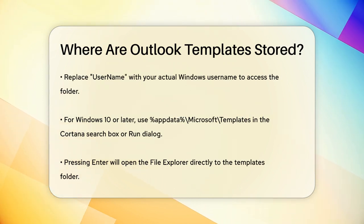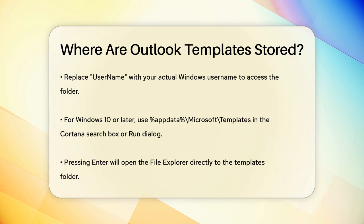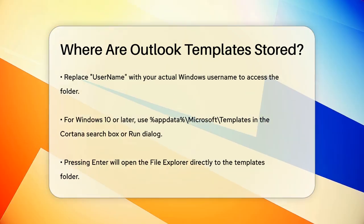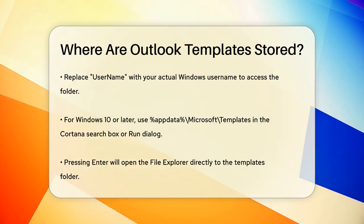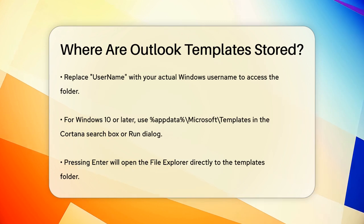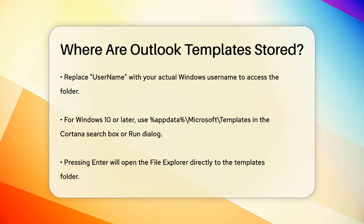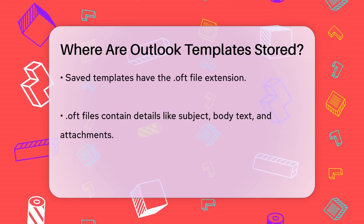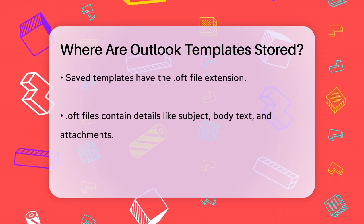If you're using Windows 10 or later, you can easily find this folder by copying and pasting %AppData%\Microsoft\Templates into the Cortana search box or the Run dialog box, and then pressing Enter. This will open File Explorer directly to the Templates folder.